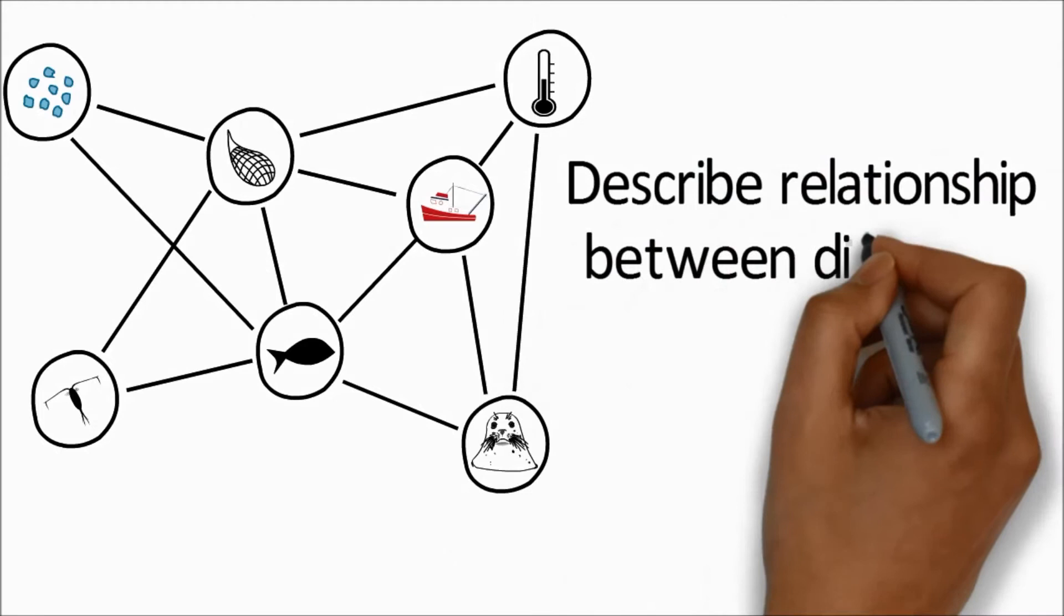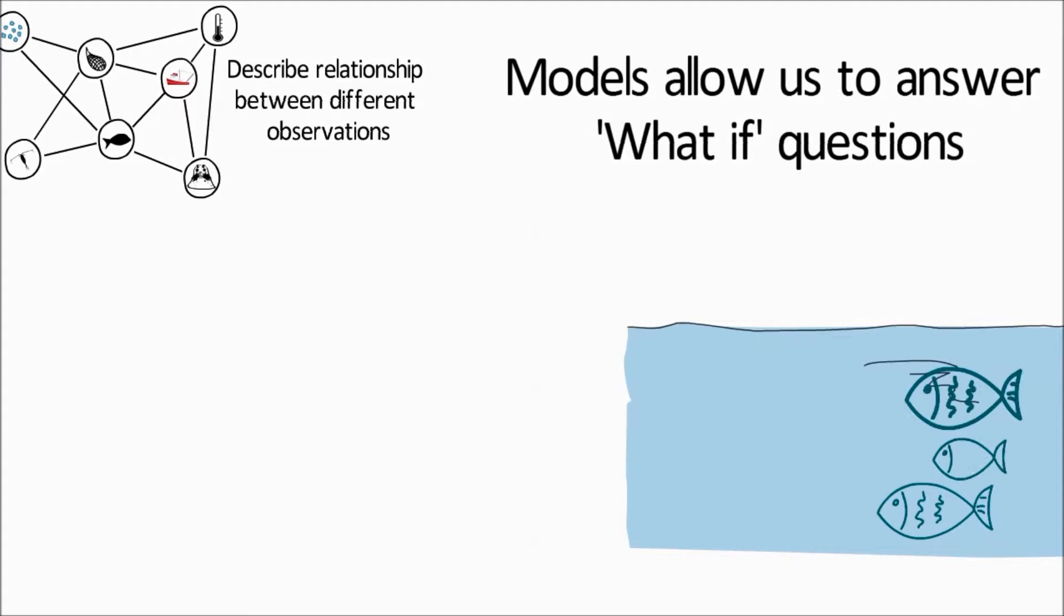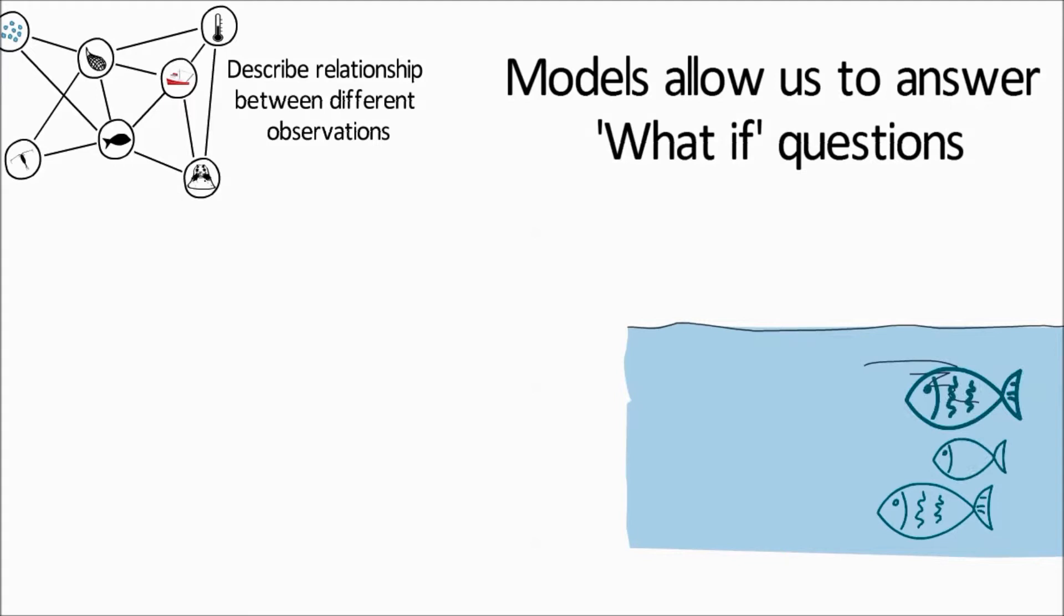Fisheries models are used to help describe the relationship between different observations and allow us to answer what-if questions, such as what will happen to the future numbers of mature spawning fish in the sea if catches go up or down by a certain amount.